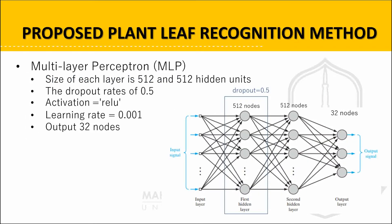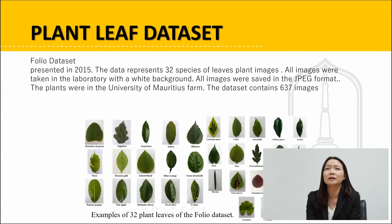And the multi-layer perceptron: this research used two hidden layers where the size of each layer is 512 hidden units. Dropout regularization is used to prevent neural networks from overfitting. The dropout rate of 0.5 for all hidden units is selected.